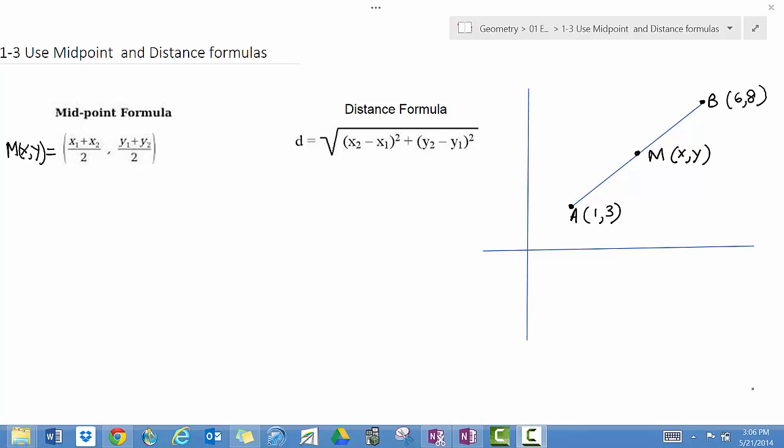The midpoint of a segment is the point that divides a segment into two congruent segments. A segment bisector is a point, ray, line, line segment, or plane that intersects a segment at its midpoint. A midpoint or segment bisector bisects a segment.